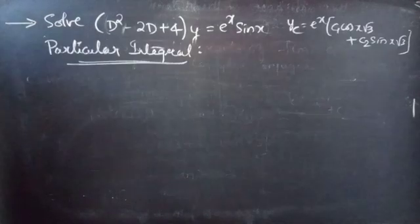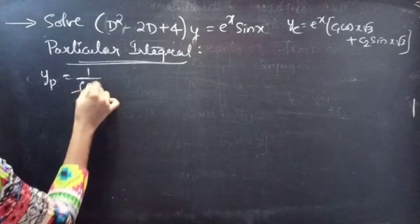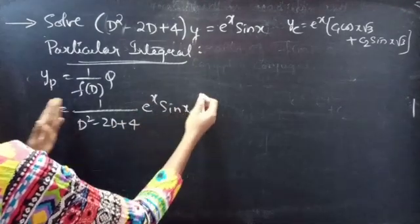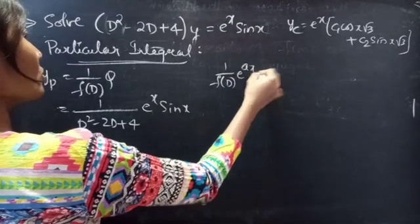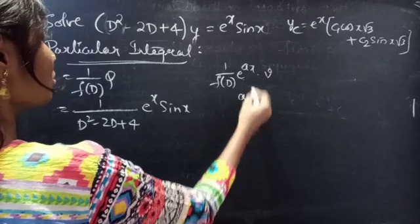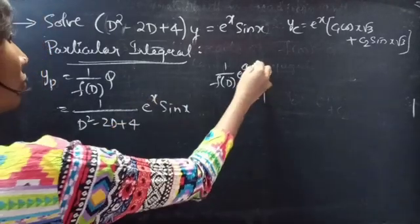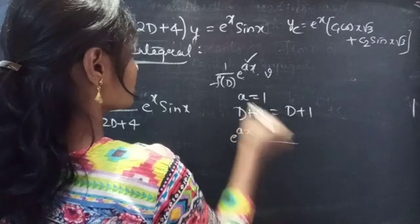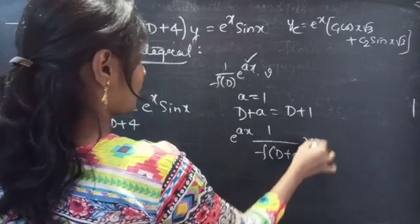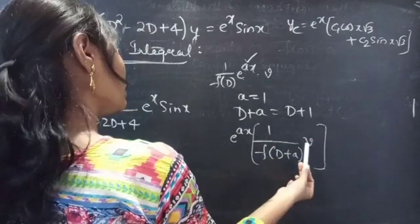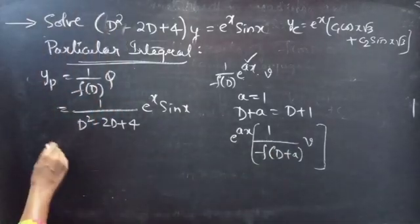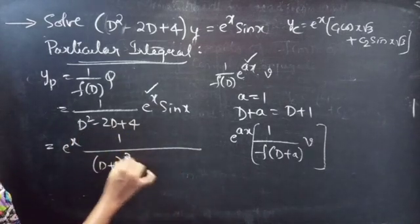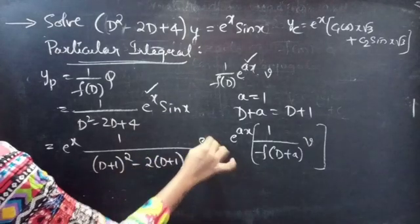Now let's find the particular integral. We will find the particular integral using 1/f(D) into Q. We have f(D) = D squared minus 2D plus 4 and Q is e to the power x times sin x. So this is of the form 1/f(D) into e^(ax) times v. Comparing, a equals 1, so we need d plus a which is d plus 1. We will shift e to the power x towards the left by replacing D by D plus 1. Then we get 1 by (D+1)² minus 2(D+1) plus 4, into sin x.